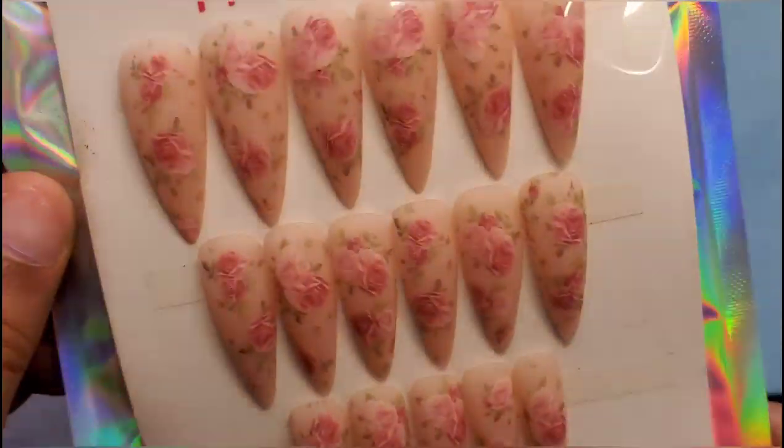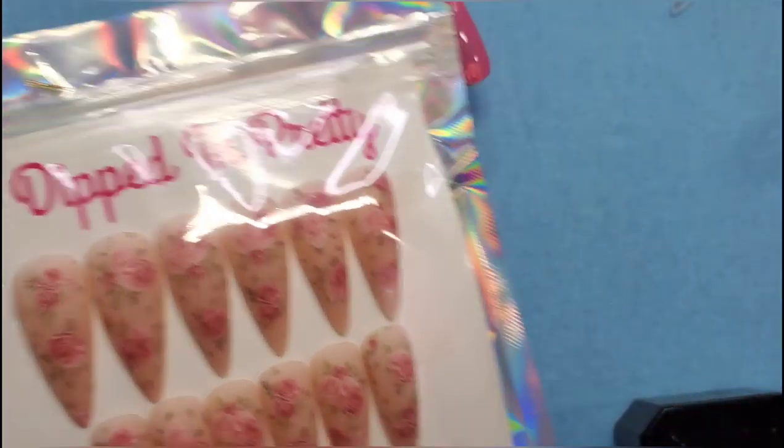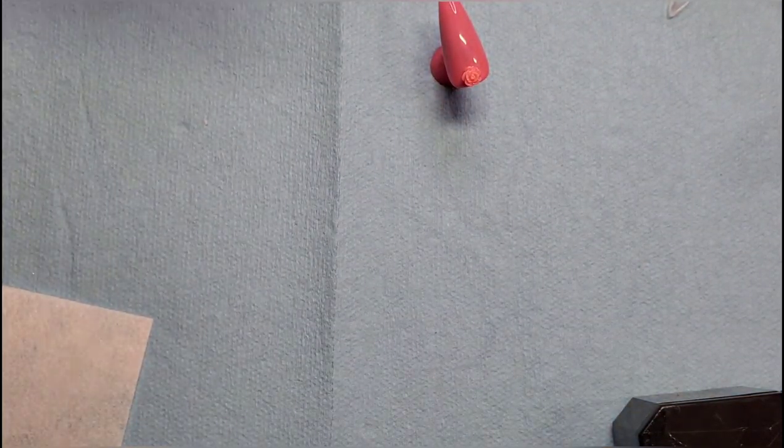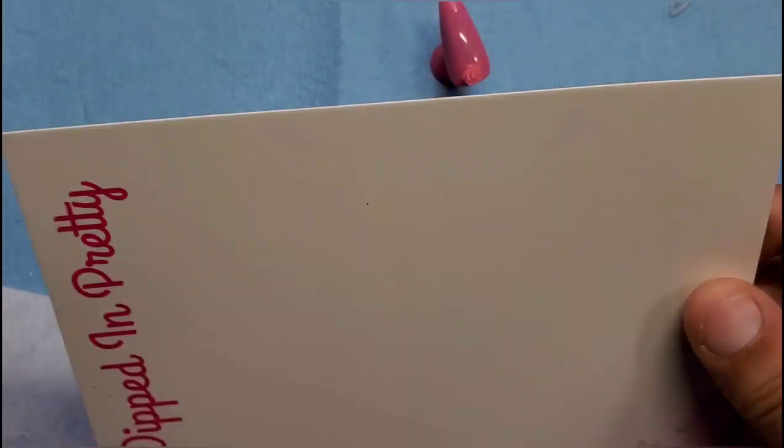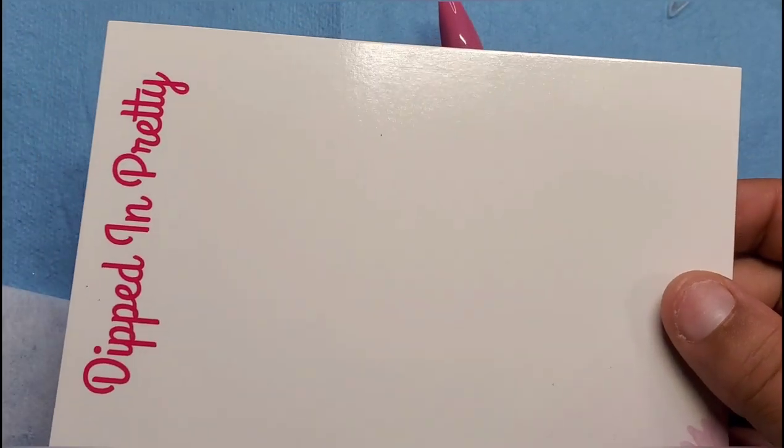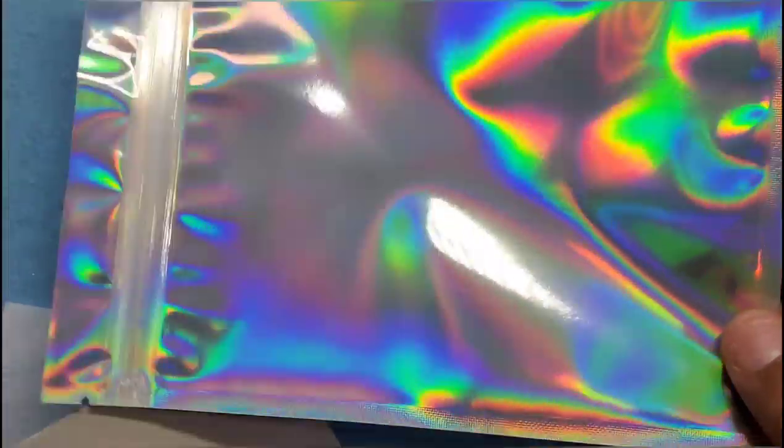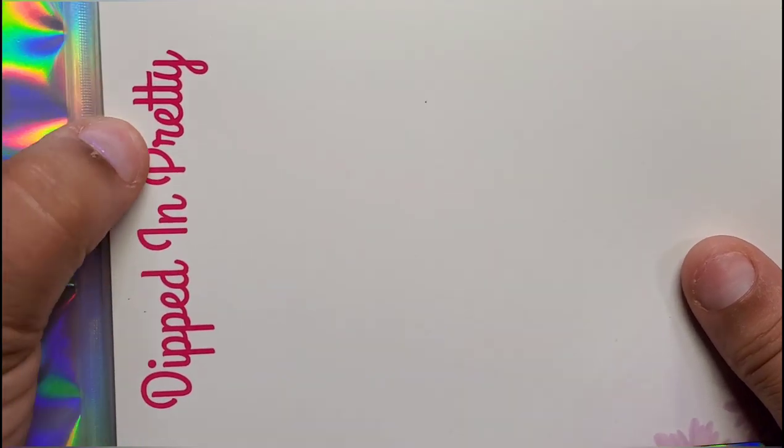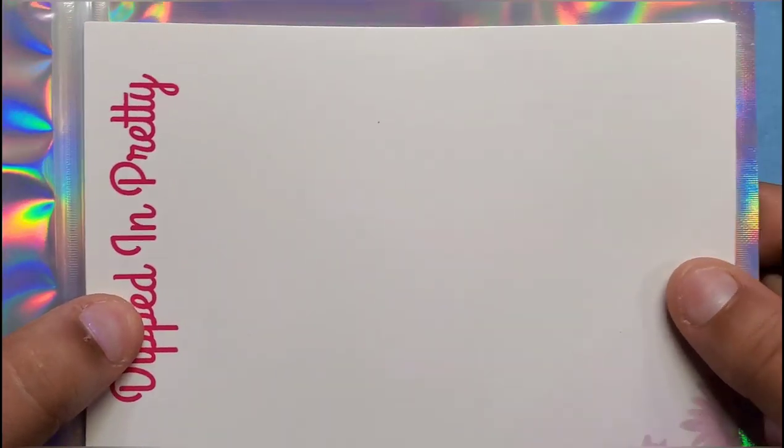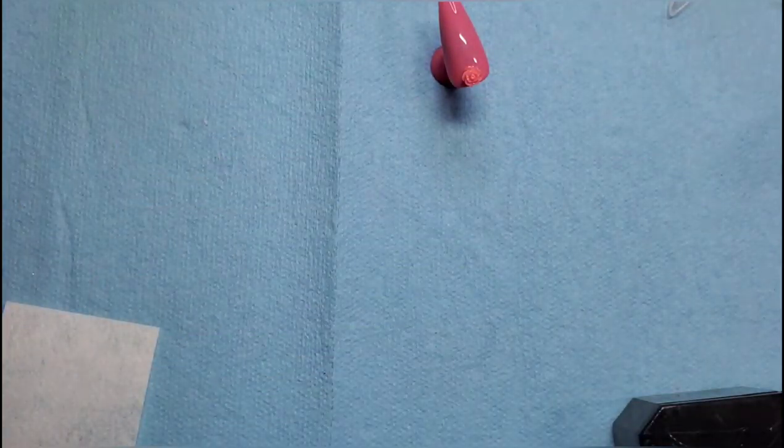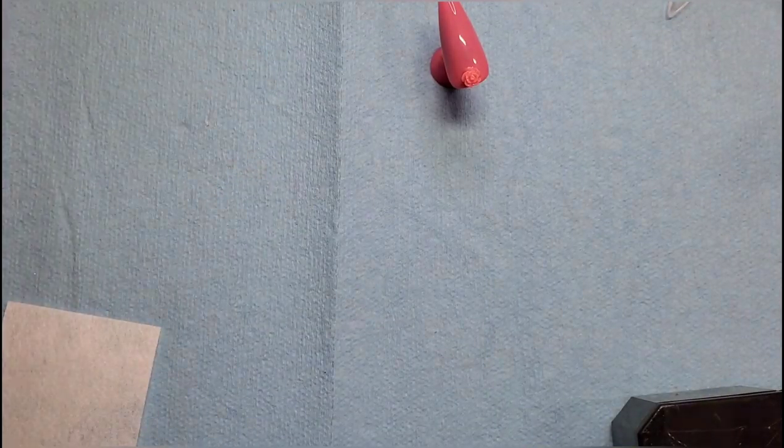This follows up on yesterday's video. I showed what I include and how I package my press-ons. It's a cheap, easy way using 4x6 cards from Vista Print and these foil pouches that are 5x7. These fit right inside. You might have to push it down a little bit, but it'll fit right under the zipper.